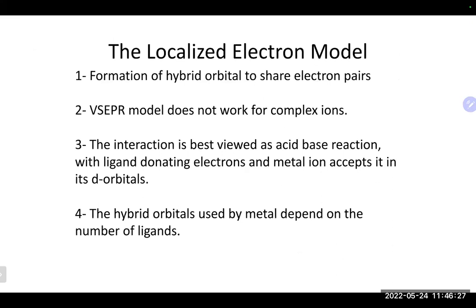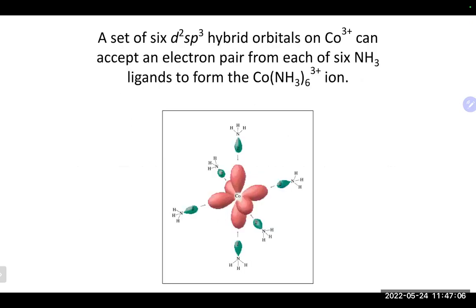Now let's talk about where electrons go in these transition metal complex ions. We discussed the localized electron model and the formation of hybrid orbitals — sp, sp², sp³, sp³d, sp³d². The VSEPR model doesn't work really well for complex ions. What's happening in complex ions is more of a Lewis acid-base situation where electrons are being donated. The hybrid orbitals used by the metal depend on the number of ligands — for six ligands the hybridization is sp³d².